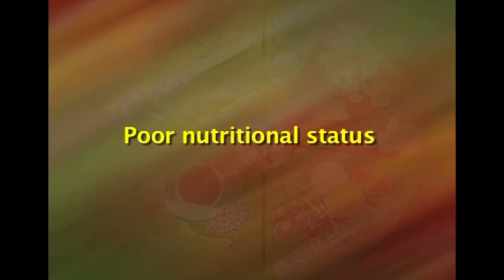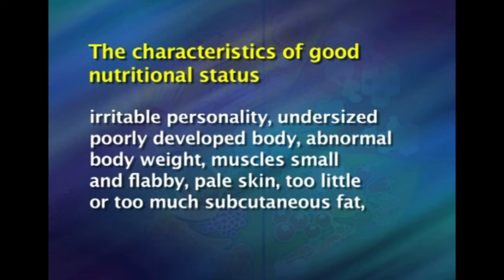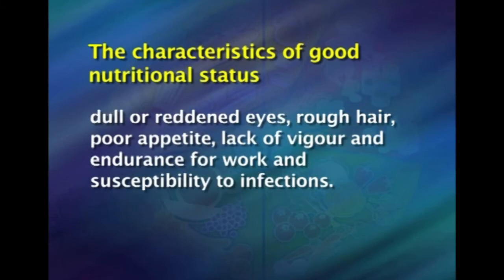Coming to poor nutritional status, the characteristics are: irritable personality, undersized and poorly developed body, abnormal body weight, poor and small muscles, pale skin, very little or too much subcutaneous fat, reddened eyes, rough hair, poor appetite, and lack of vigor and endurance for work and susceptibility to infections.